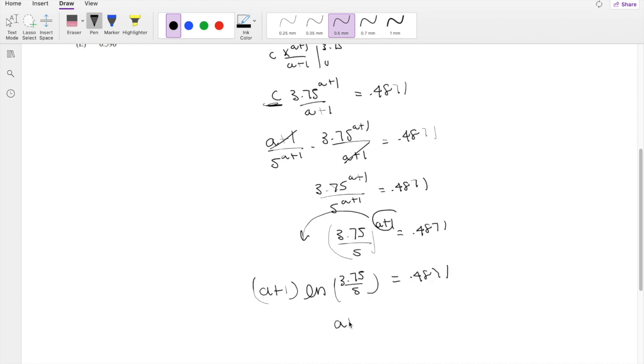So we know (a+1), oh, natural log, because we have to take the natural log for this rule to work. So this is equal to natural log of 0.4871.